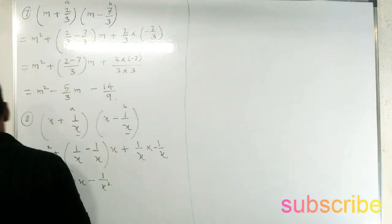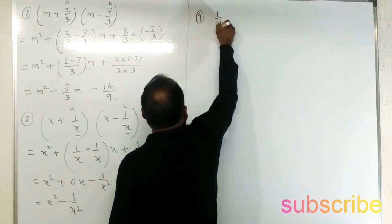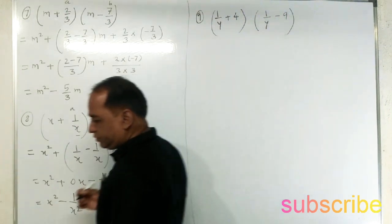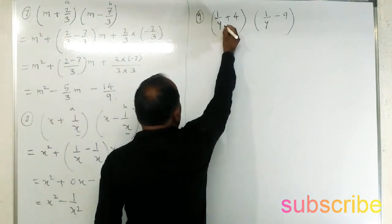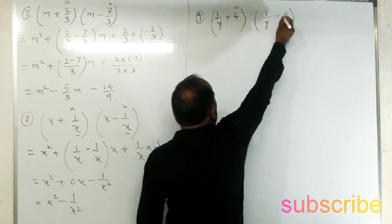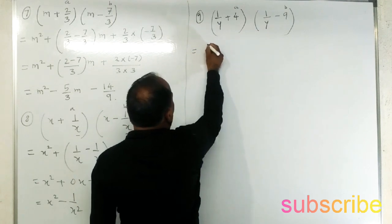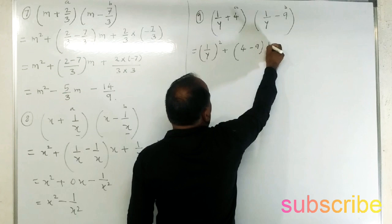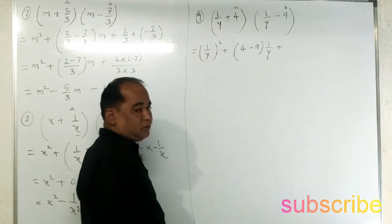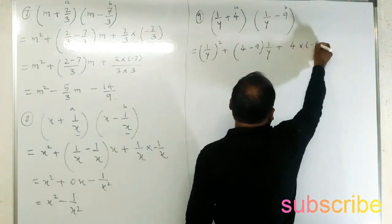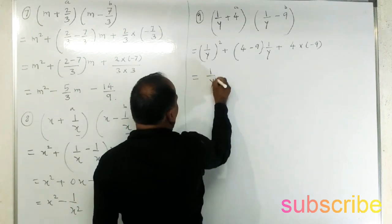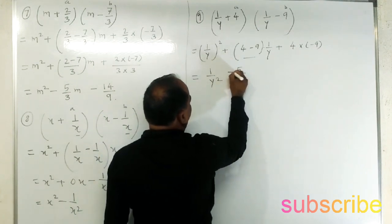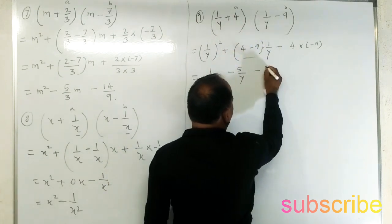Example 9: (1/y + 4)(1/y - 9). Here the variable is 1/y, a is 4, and b is minus 9. Applying the formula: (1/y) squared plus (4 + (-9)) times (1/y) plus 4 times minus 9. So we get 1/y squared plus (4 - 9) times (1/y) which is minus 5 times (1/y), plus 4 times minus 9 which is minus 36.